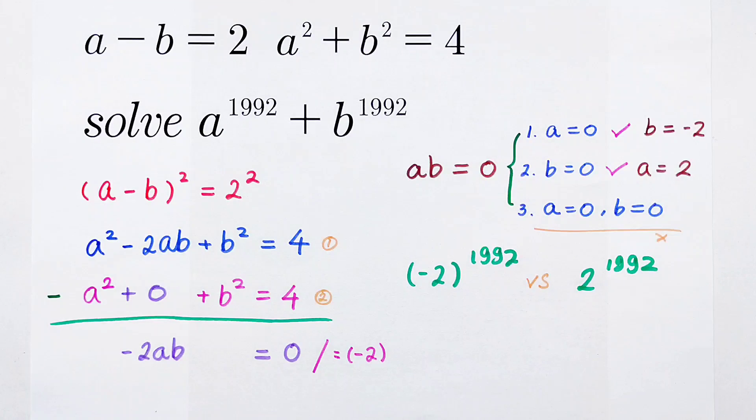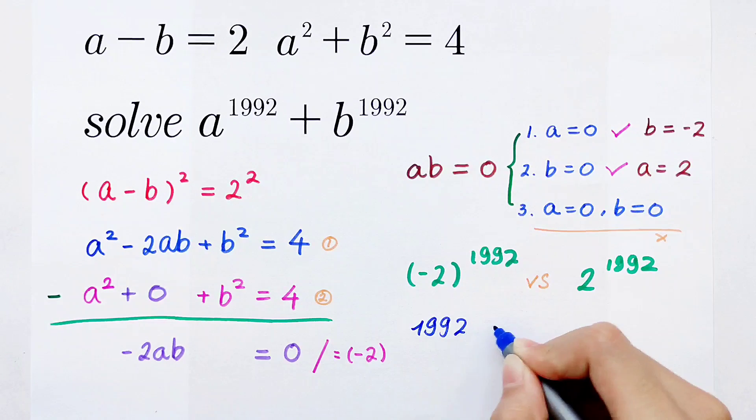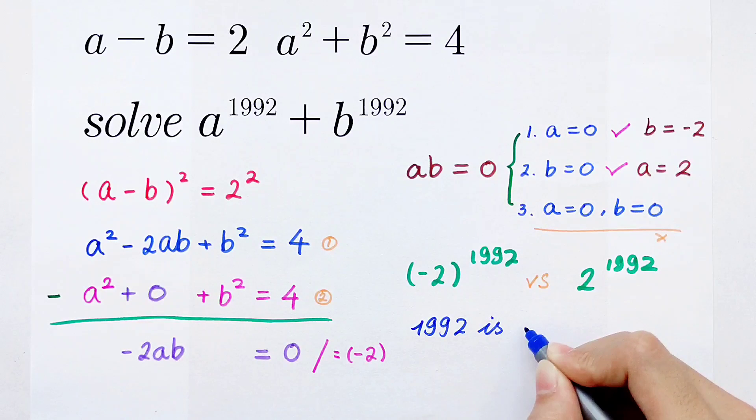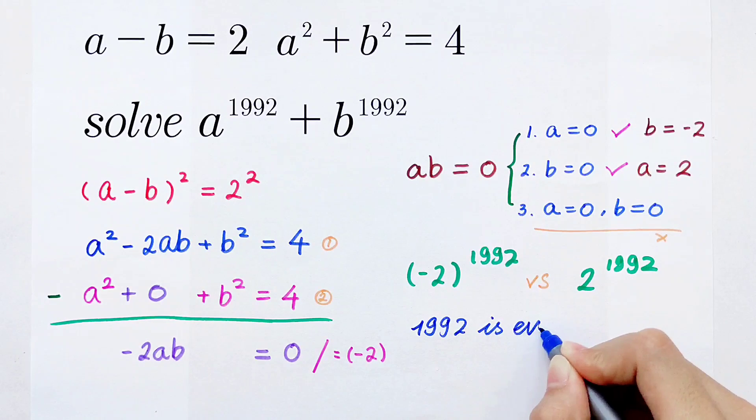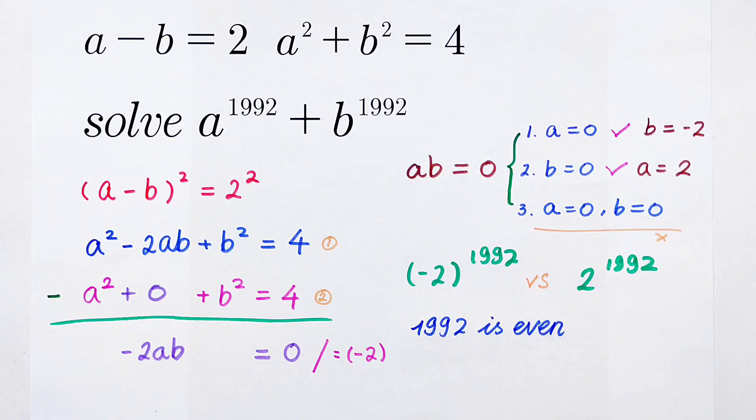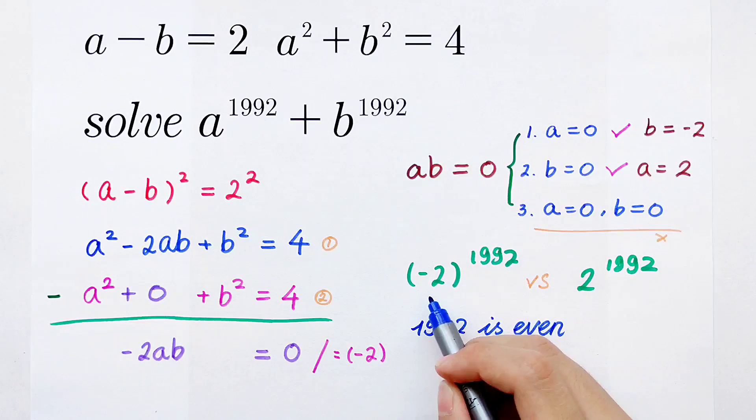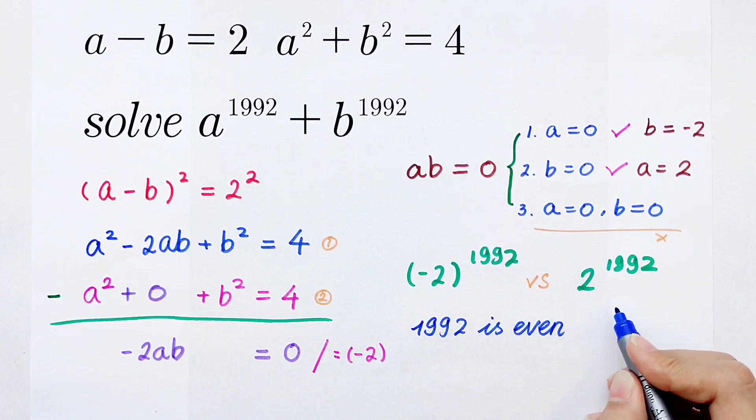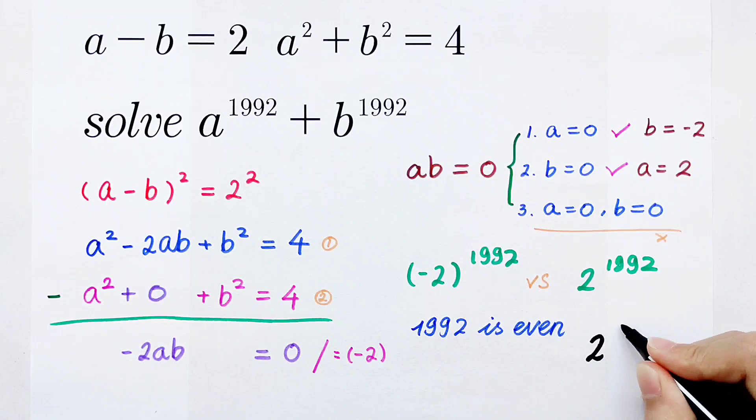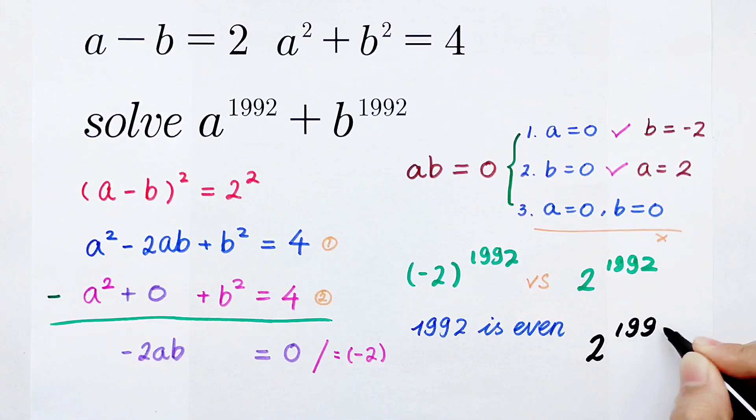Of course it is. Because 1992 is an even number, minus 2 to the power of 1992 and 2 to the power of 1992 have the same value. So the final answer is 2 to the power of 1992.